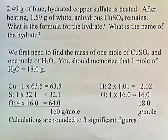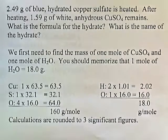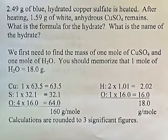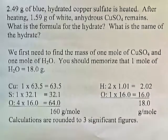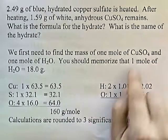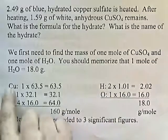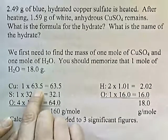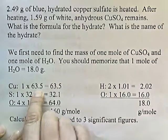First we need to find the mass of 1 mole of copper sulfate and 1 mole of water. You should memorize that 1 mole of water is 18 grams — it's used so often you should just memorize it. So for copper sulfate: 1 copper, and from the periodic chart, copper is 63.5.